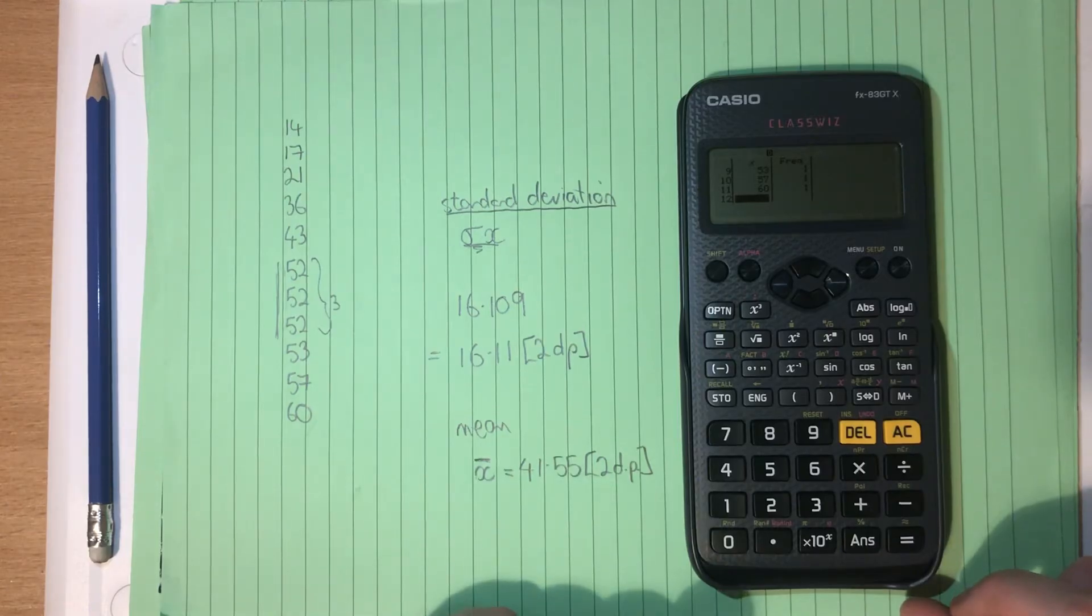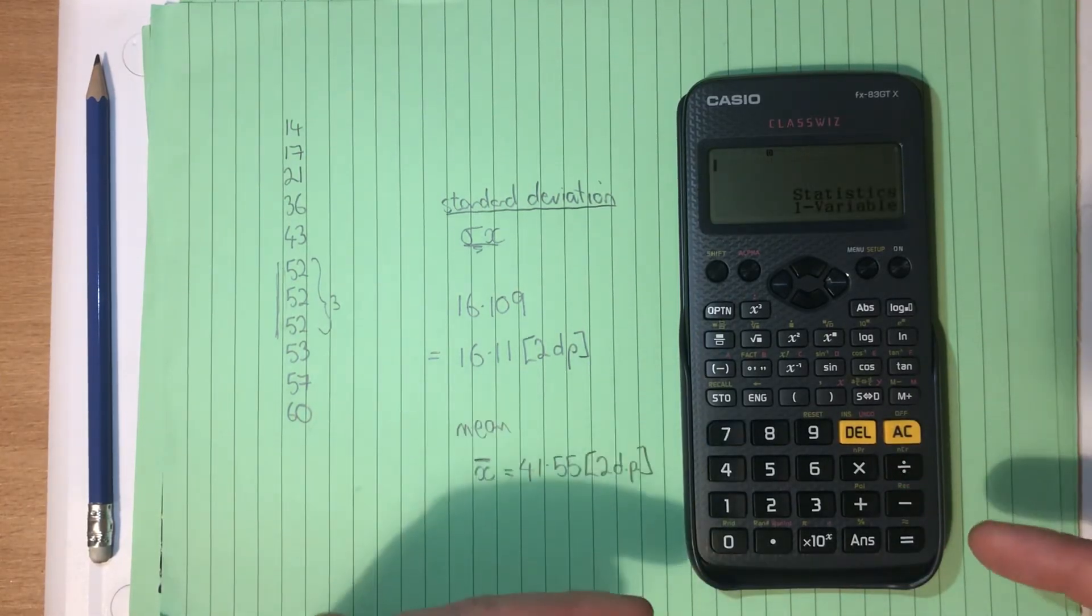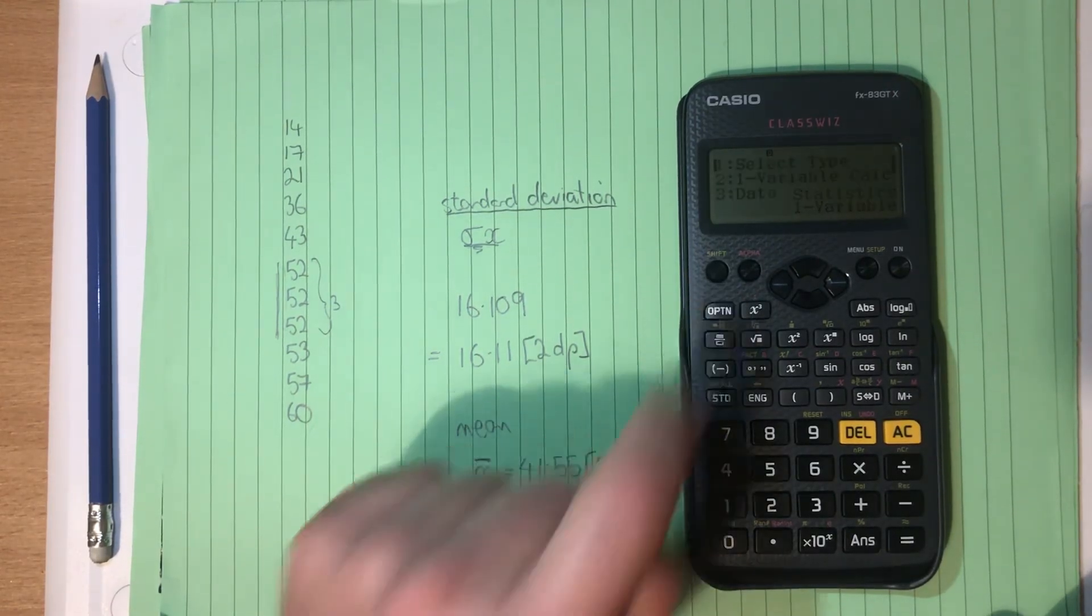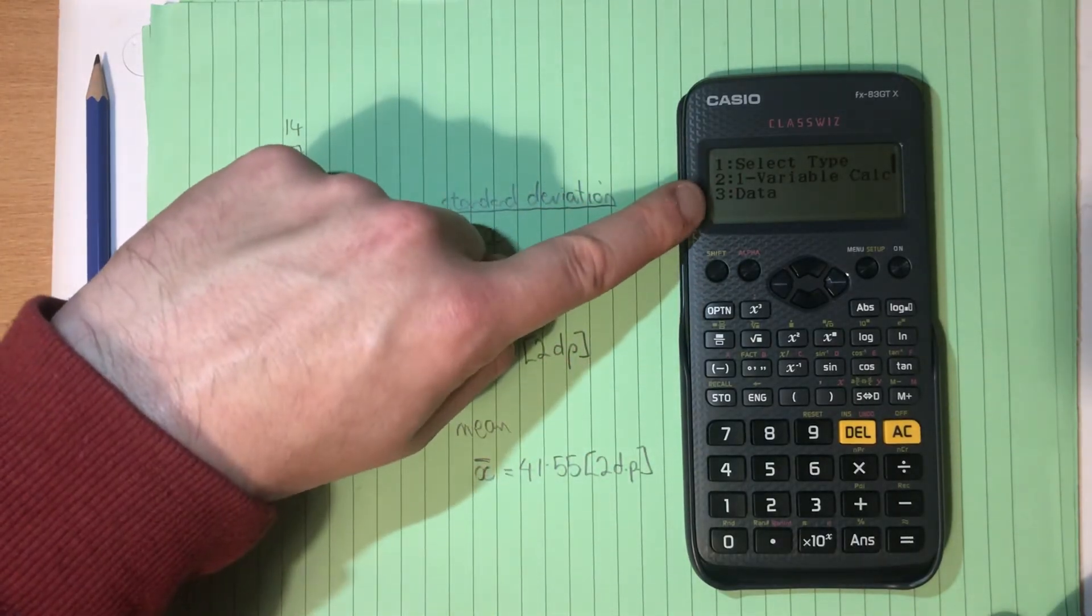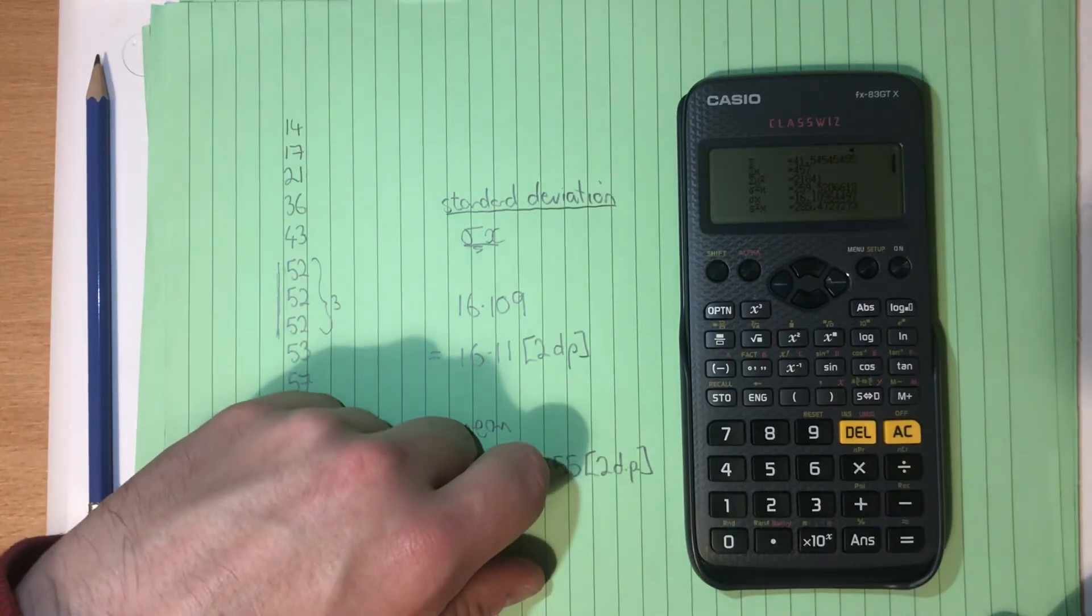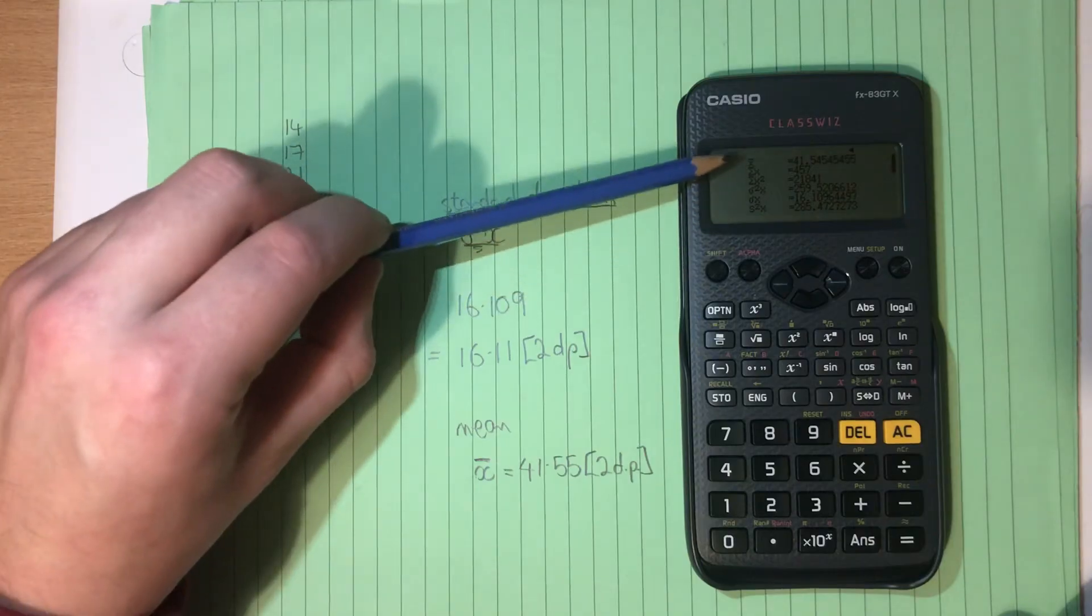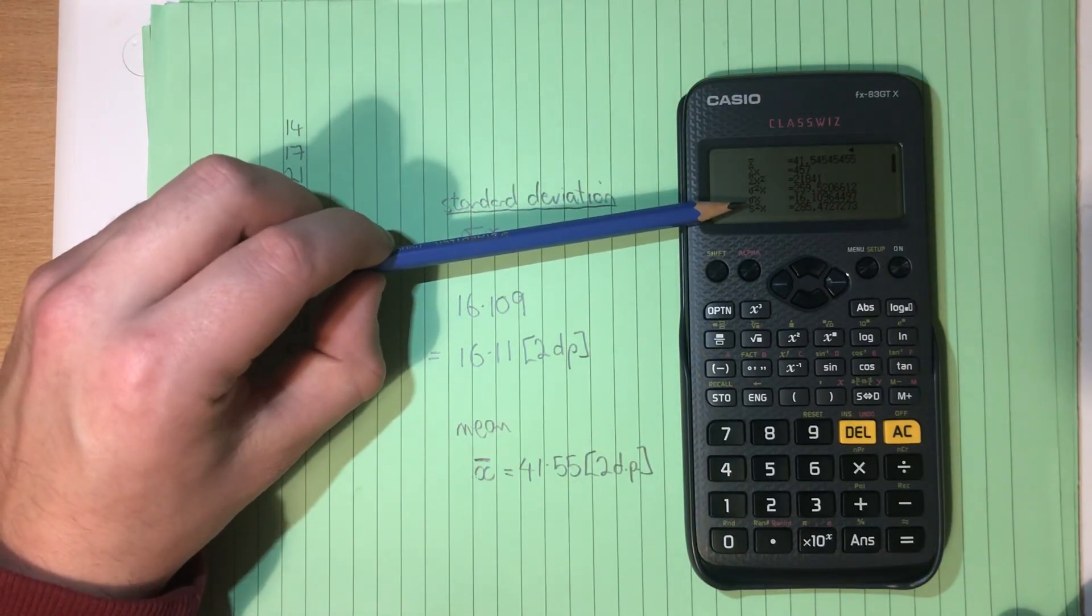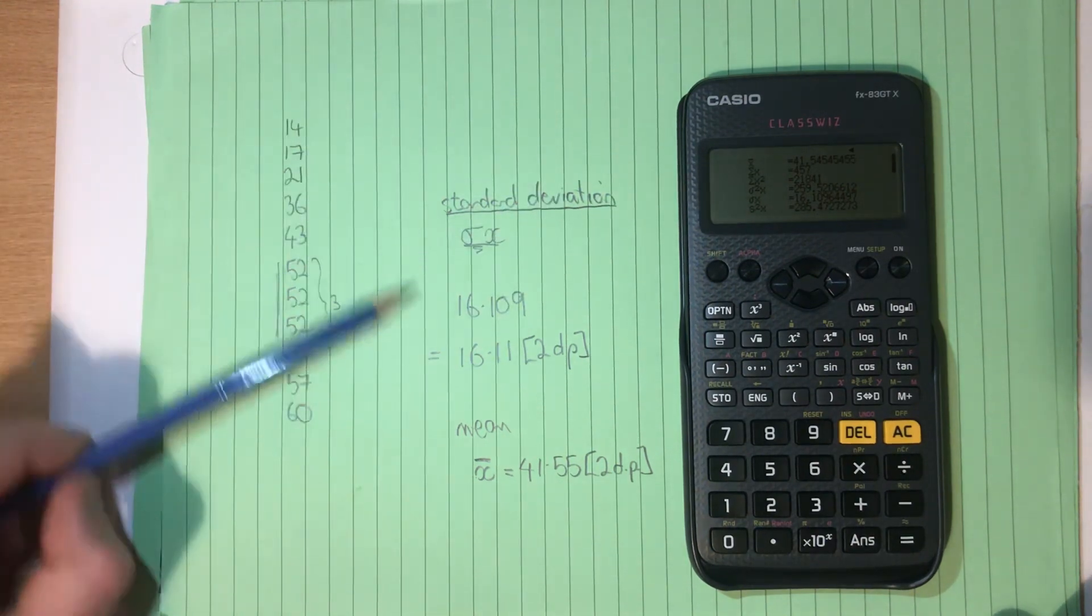And then I hit AC. So the information is now in the calculator's mind. And I then come along and I go into options, OPTN. That gets me up to here. And I go number 2. And from there, I read that Sigma X is this guy here, 16.101 or 109. Sorry.